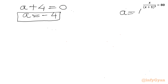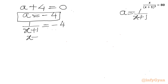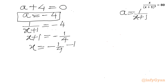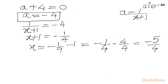Now a was our substitution: 1 over (x plus 1). So 1 over (x plus 1) equal to negative 4. Taking the reciprocal of both sides, x plus 1 equal to minus 1 over 4. Subtracting 1 from both sides, x equal to minus 1 over 4 minus 4 over 4, so our first real solution is x equal to minus 5 over 4.